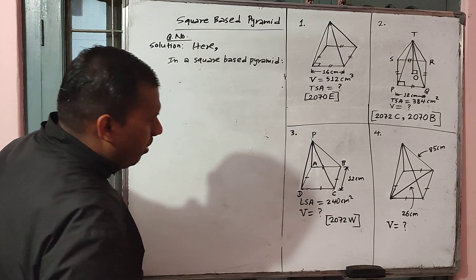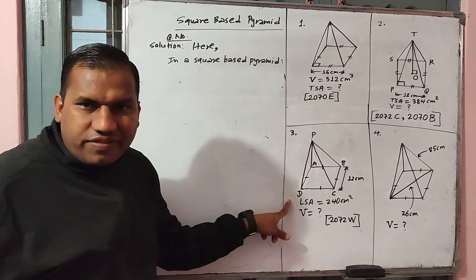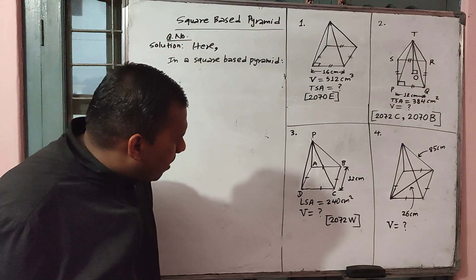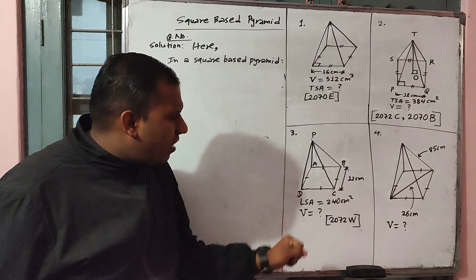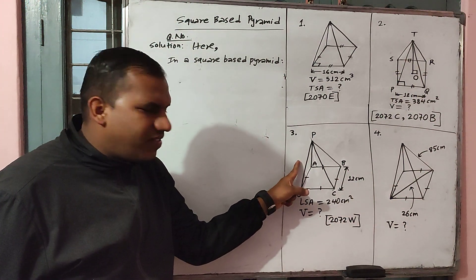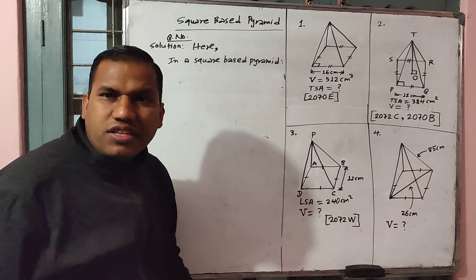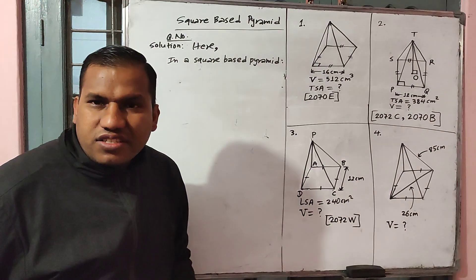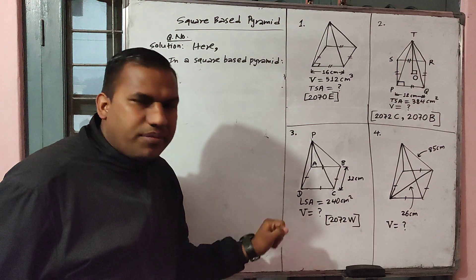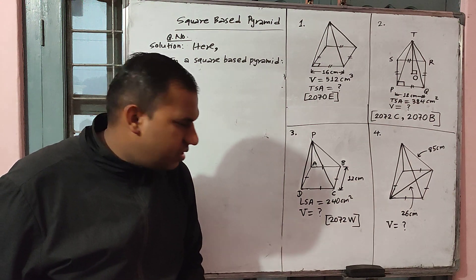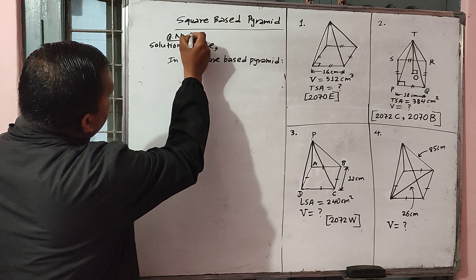In question number 3 we have given the lateral surface area, also known as the area of triangular faces in the square base pyramid. In the square base pyramid there are 4 triangular faces: one on the front, another back, one on the right hand side, one on the left hand side. Except the base, all are triangular faces; the base is the square face. LSA means the area of the 4 triangular faces — it is the lateral surface area.